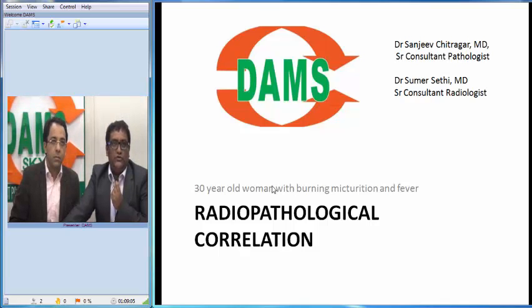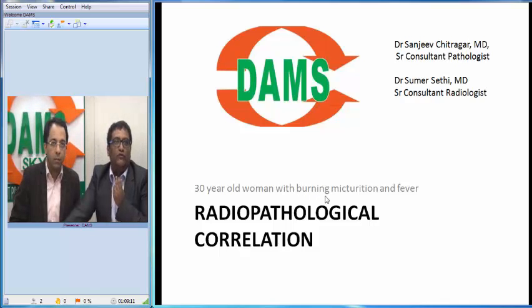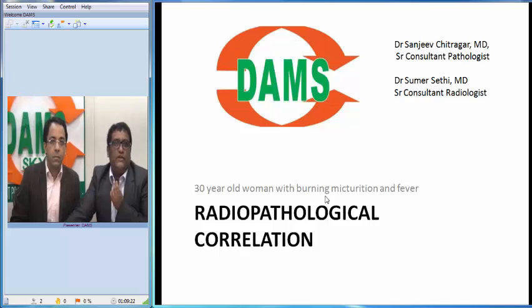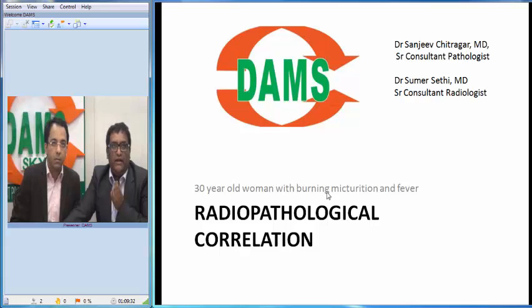Whenever such a patient comes, we would first like to do a basic investigation of routine urine microscopy. If there was some infectious cause or any inflammatory cause in the urine, urinary tract, or kidney, we could identify at least some findings in urine pathology. In this case, urine microscopy was done — let me show you some images.